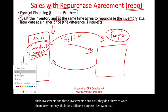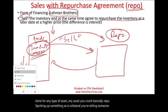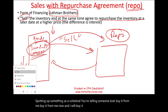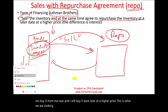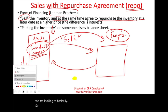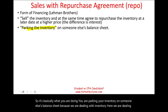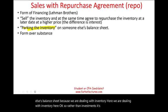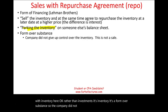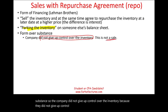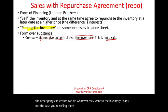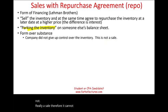Repo could be done for any type of asset. You're essentially putting something up as collateral — you tell someone: buy it from me now, and I will buy it back later at a higher price. You are parking your inventory on someone else's balance sheet. The company did not give up control over the inventory, so it's not really a sale. If you give up control, the other party can do whatever they want with the inventory — that's not the case here. Therefore, it cannot be considered a sale; it's a financing agreement.